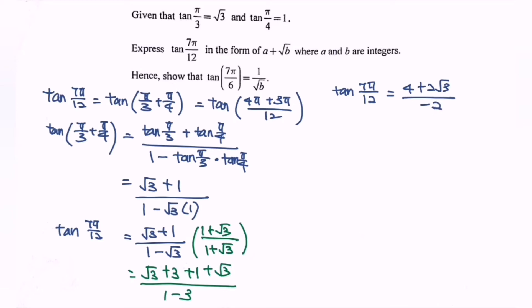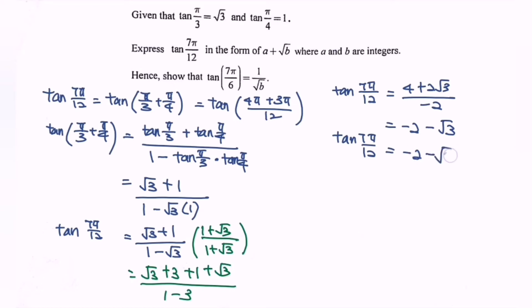Simplifying the situation, we get −2 − √3. So tangent(7π/12) = −2 − √3, which is in the format a + √b.